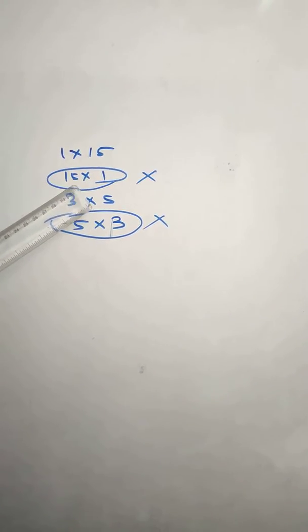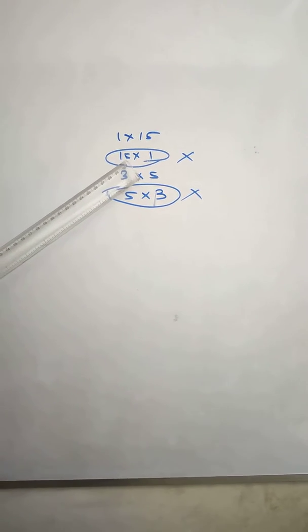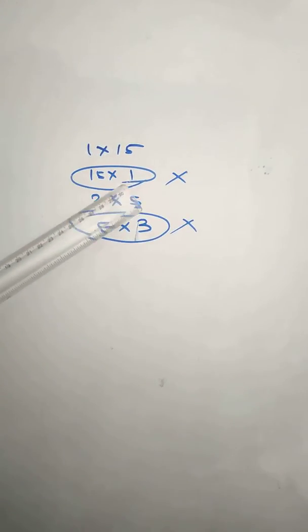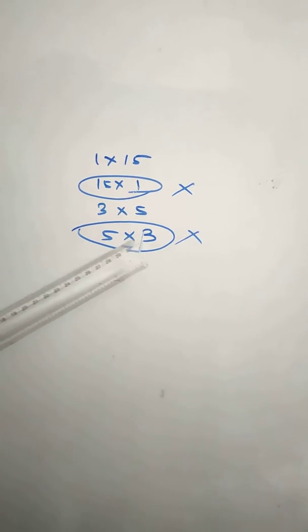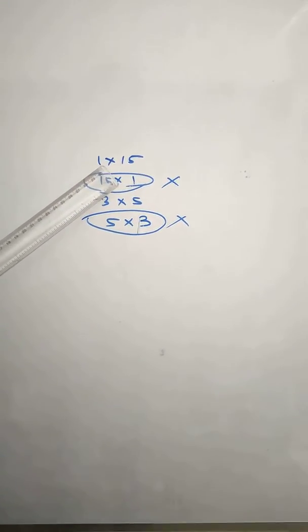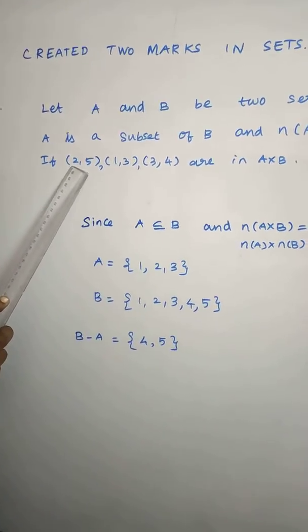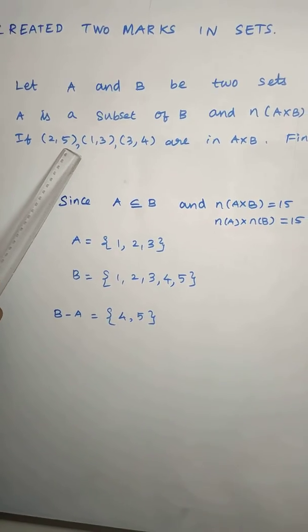If n(A) is 15 and n(B) is 1, then n(A) is greater than n(B). But A is a subset of B, so this is impossible. In this case, we consider 1 into 15 or 3 into 5. The first number belongs to A, the second to B.